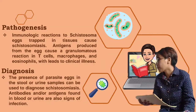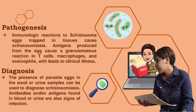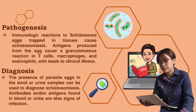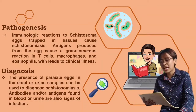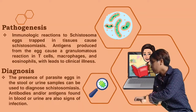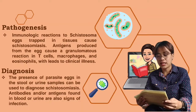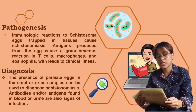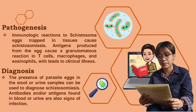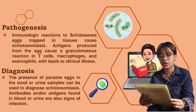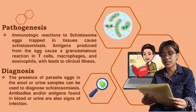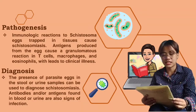For the diagnosis, the presence of parasite eggs in the stool or urine samples can be used to diagnose schistosomiasis. Antibodies and/or antigens found in blood or urine are also signs of infection. Adult schistosomes dwell in the veins of the mesentery. Some eggs pass through the mucosa of the intestine or bladder and are passed in the stool or urine. Others remain inside the host organ or are transferred to the liver, and on rare occasions to other locations such as the lungs, central nervous system, and spinal cord.